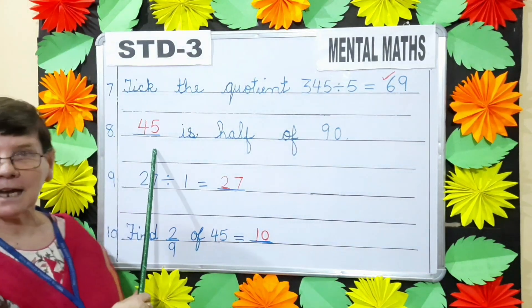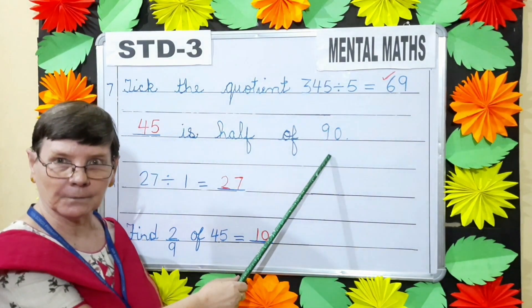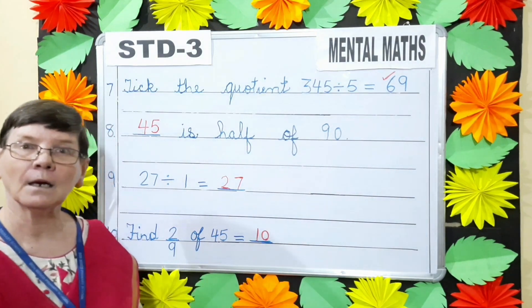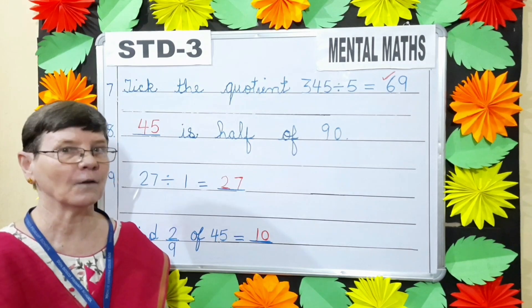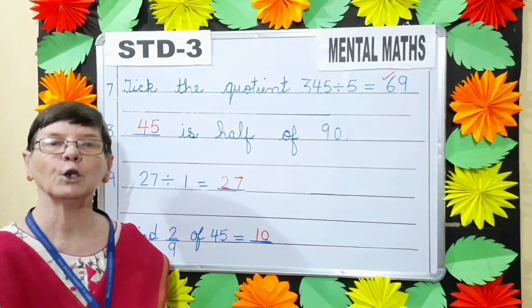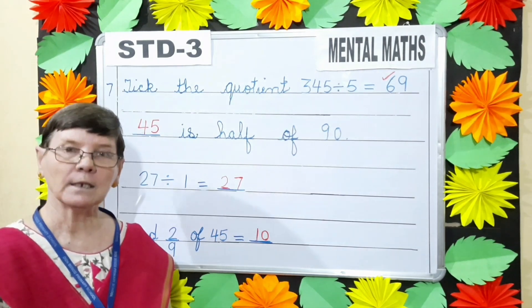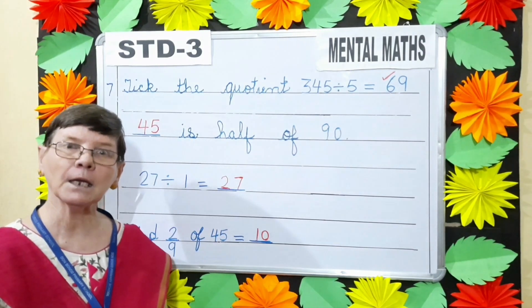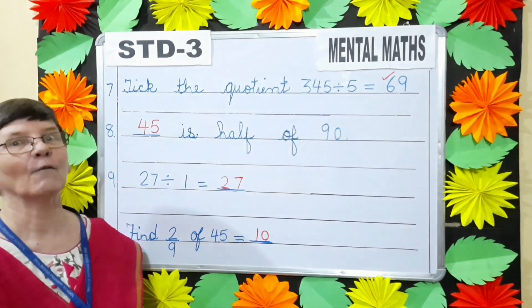Next, dash is half of 90. Now you have to find half of 90. To find half of any number, you have to divide by 2. So divide 90 by 2. And what will you get? Yes, 45.